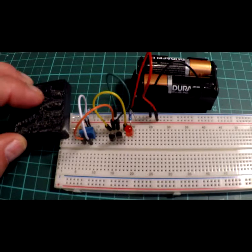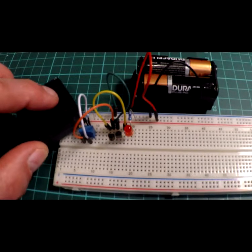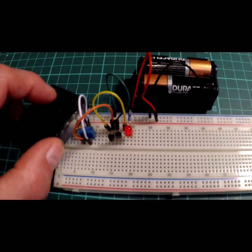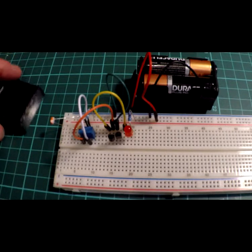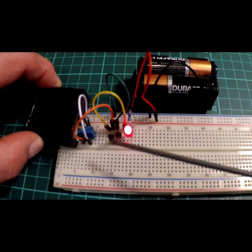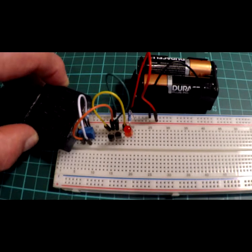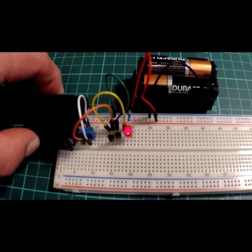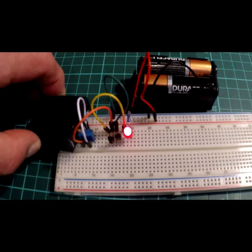Now, if I cover the LDR, the LED will illuminate. Obviously, that will be adjustable on the trimmer here to fine-tune it slightly. But it's very bright in here, which is why it doesn't like to light up.